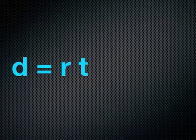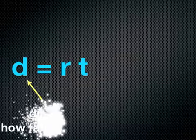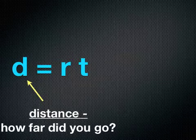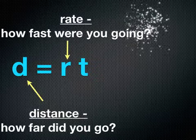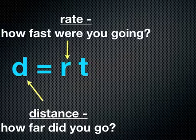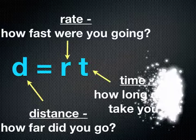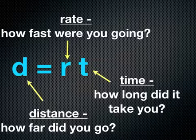When we take a closer look, the D represents the distance, or how far did you go. The R represents the rate, or how fast you were going. And T represents the time, or how long did it take you. So distance equals rate times time.